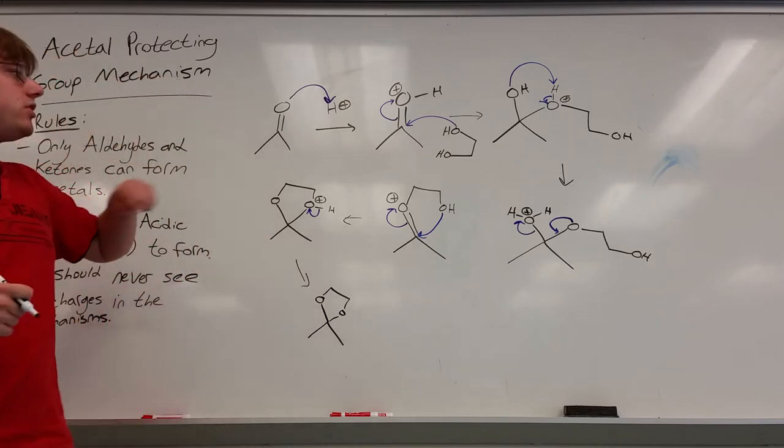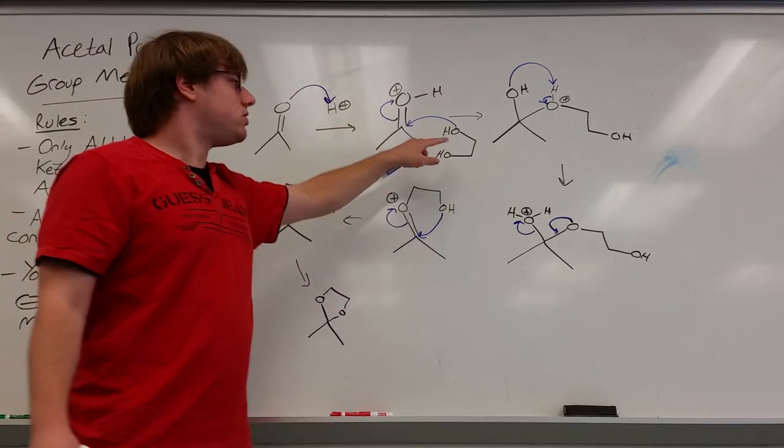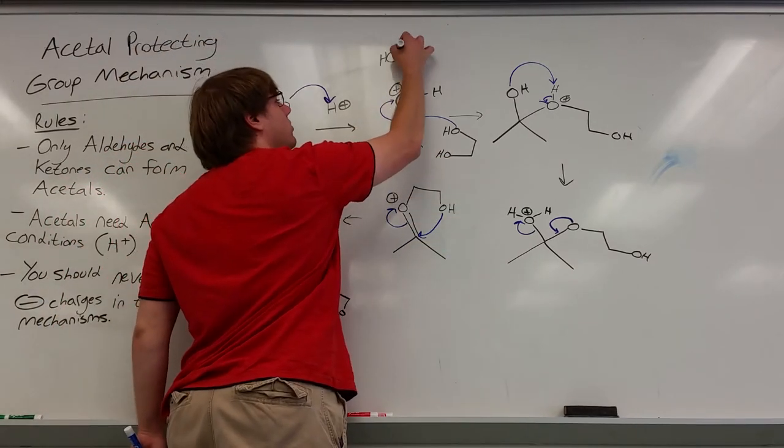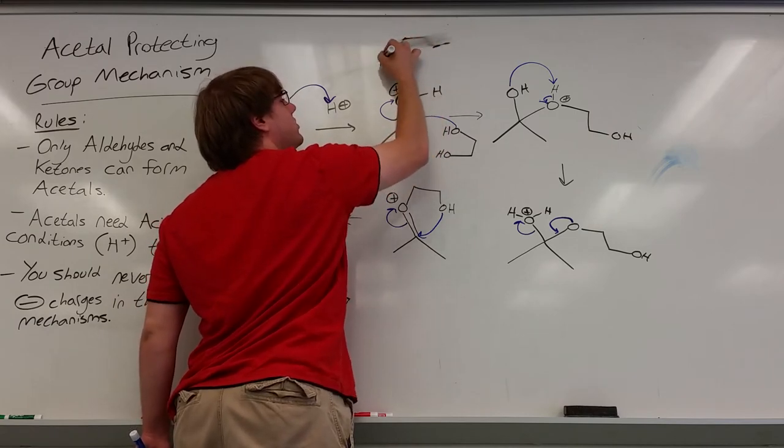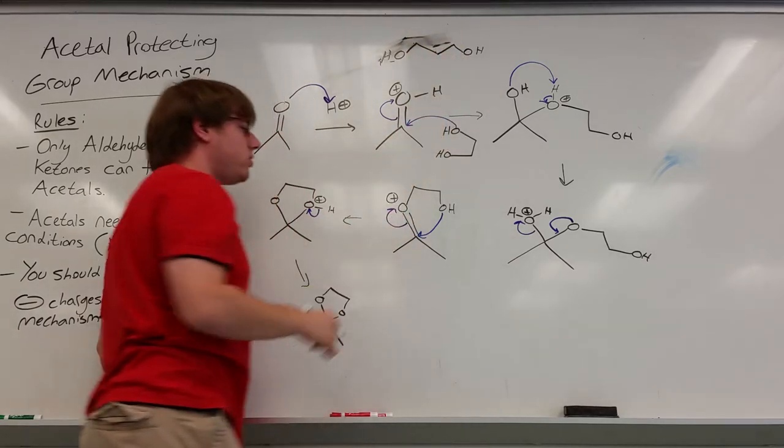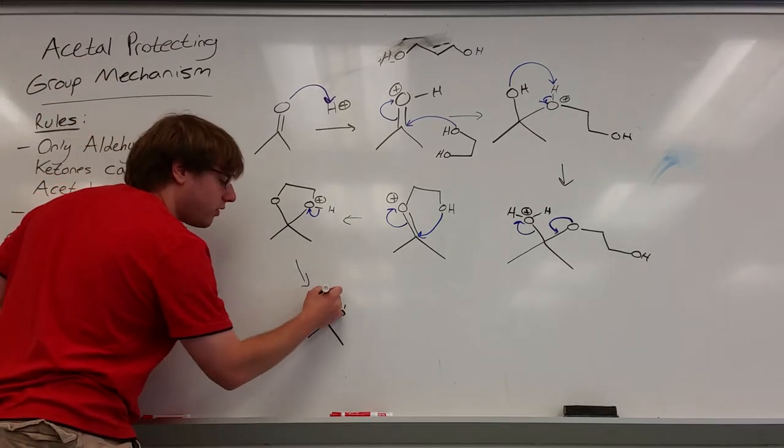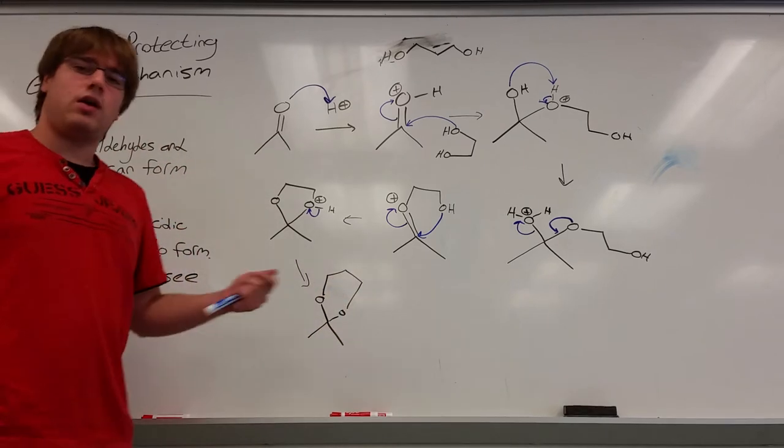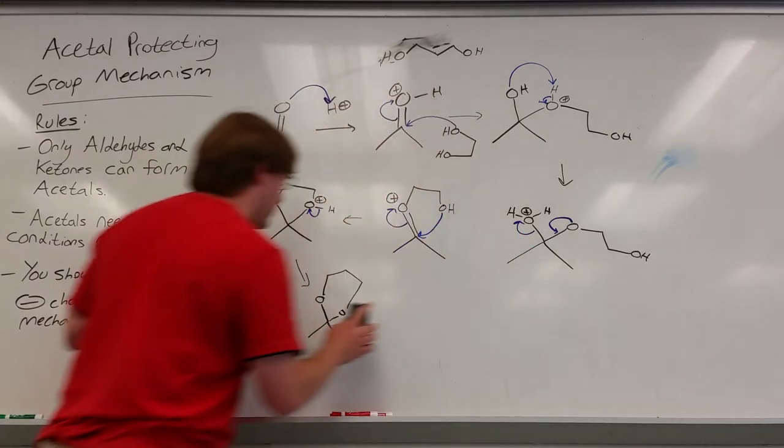And so that's how you're going to add the protecting group. You need H plus and a diol. You'll usually see just a two carbon diol but I have seen a three carbon diol used in the past. So something that looks like this where there are three carbons connecting the two OHs. One, two, three. And that would just give you a six-membered ring instead of a five-membered ring. Either way the mechanism is exactly the same.